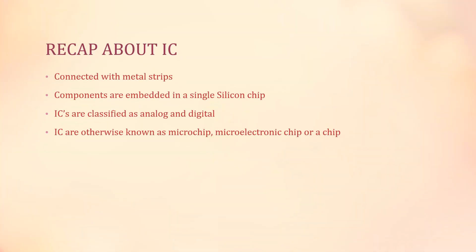To summarize what we have discussed: integrated circuits are embedded in a single silicon chip, connected together by means of metallic strips. Integrated circuits are classified into analog signals, which are continuous, and digital signals, which are discrete and take binary values of zeros and ones. In our chapter we are going to discuss microcontrollers, which are based on digital integrated circuits. These integrated circuits are otherwise known as a microchip, or a micro electronic chip, or simply a chip.